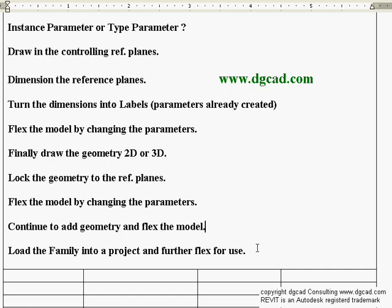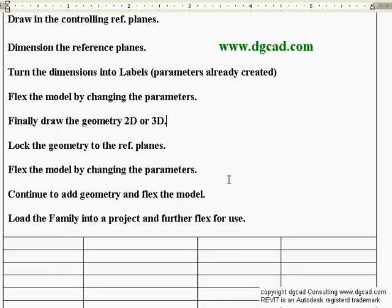Then load the family into the project and flex further for use in the project. It's back and forth between the editor and the project file. Those are the training-wheel rules for getting started and successfully creating families. You can also load the family directly into open projects — in the family editor there's a 'Load to Project' button on the left that shows all open projects and lets you check off which one to load into. You can also do a Save As.